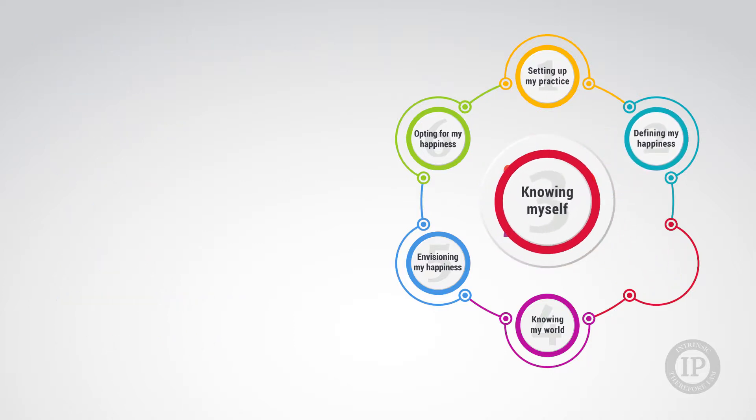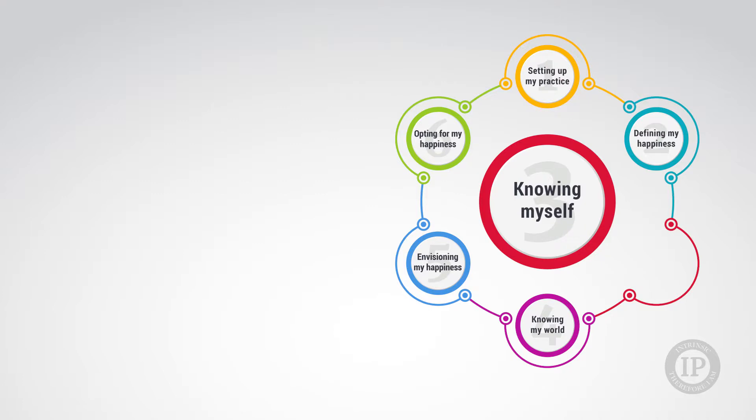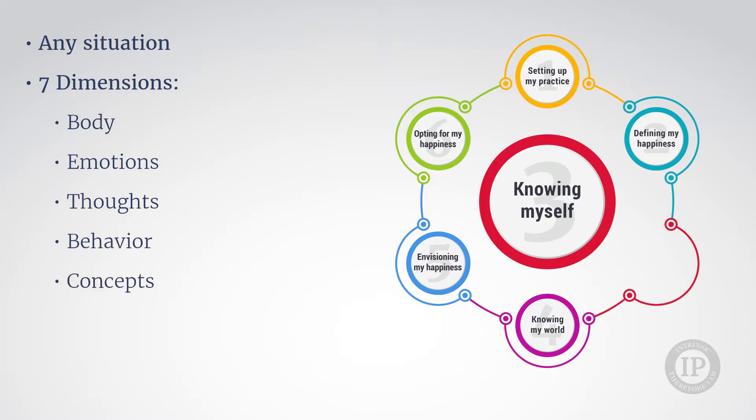The third step, entitled Knowing myself, is where you can learn about yourself in any situation according to seven dimensions: namely, your body, your emotions, your thoughts, your behavior, your concepts about yourself and the world, the psychological mechanisms you use, and whether you are in intrinsic or extrinsic mode.